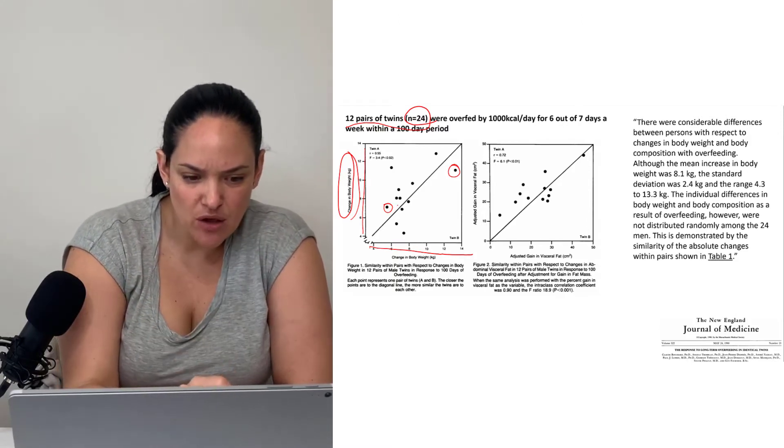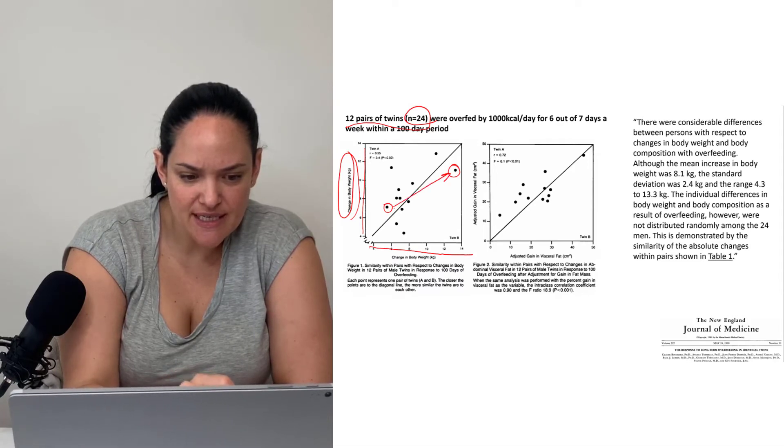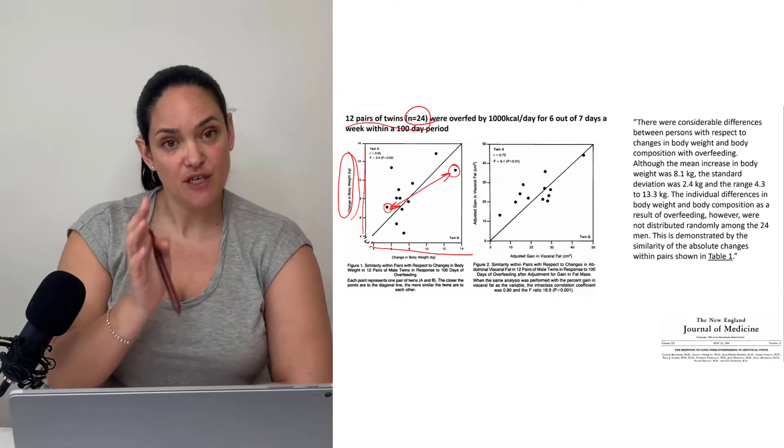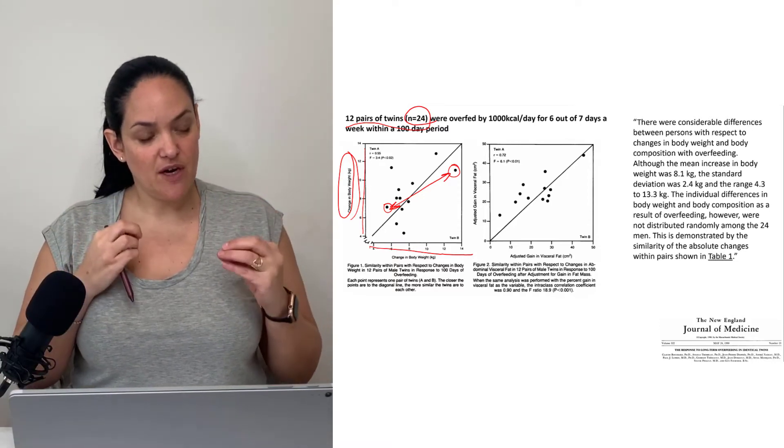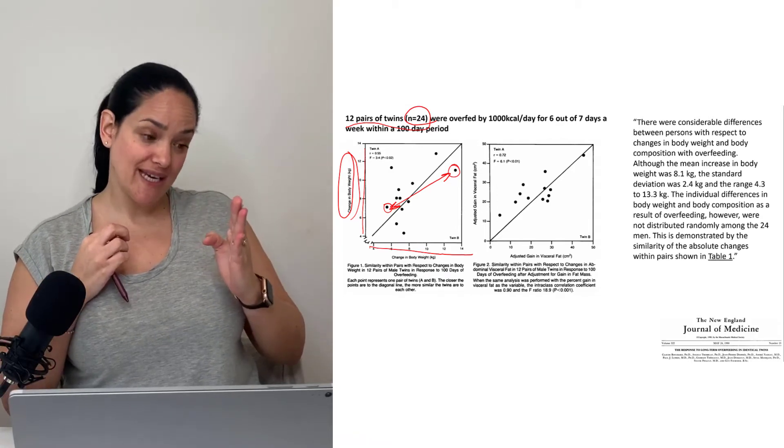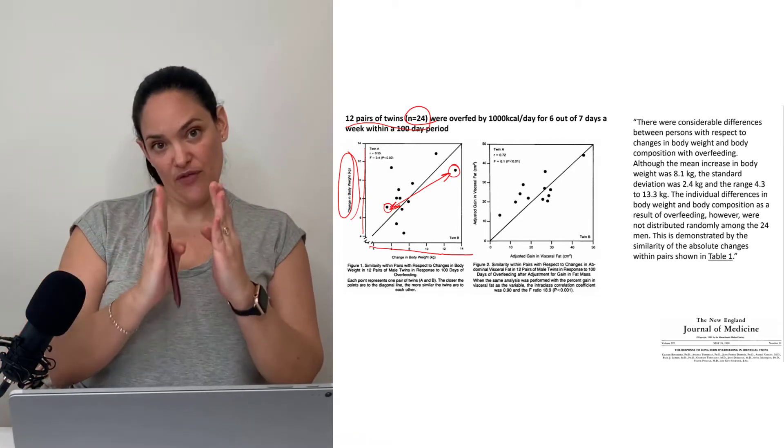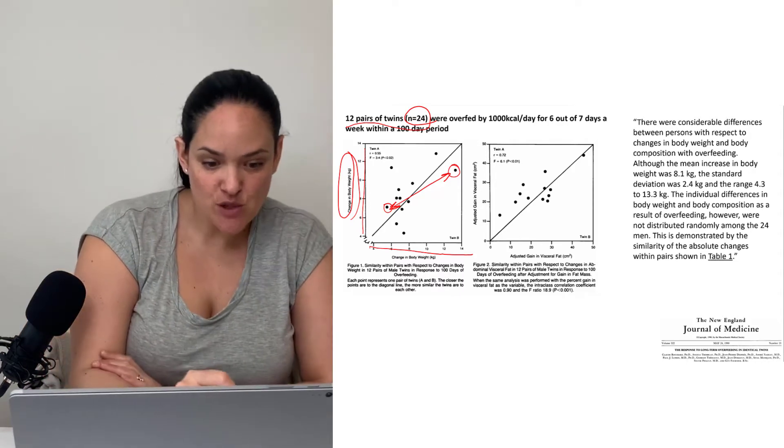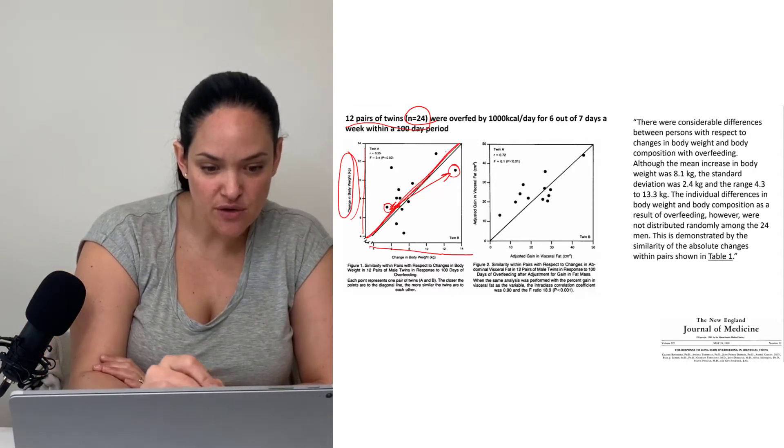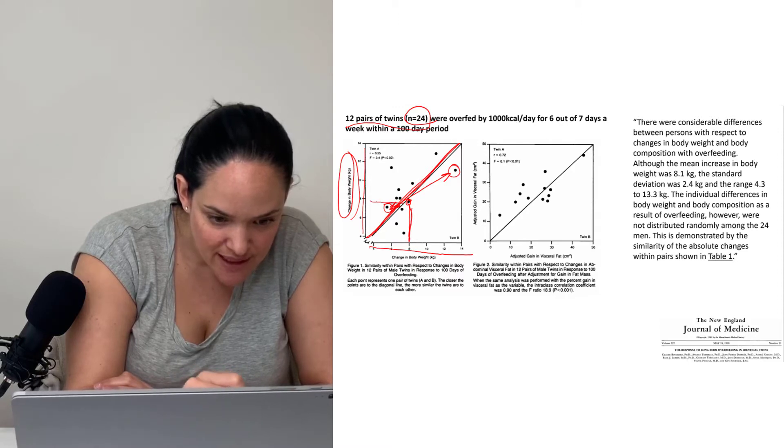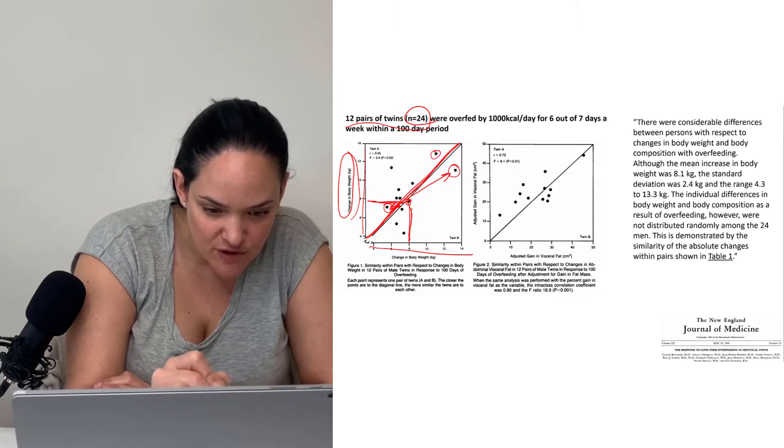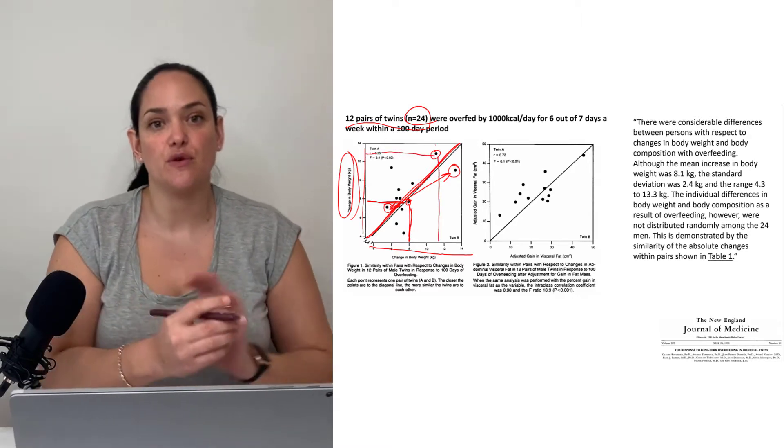Although there was a lot of heterogeneity in the weight gain between individuals within that study, what they did find was that the amount of weight that one twin gained correlated best to what the other twin gained. For instance, if one twin gained 8 kilograms, the other twin gained about the same, suggesting that there's something genetic going on that correlates with their propensity for gaining fat mass.